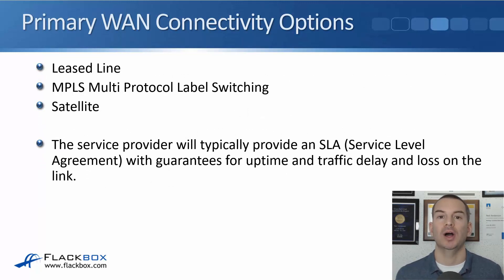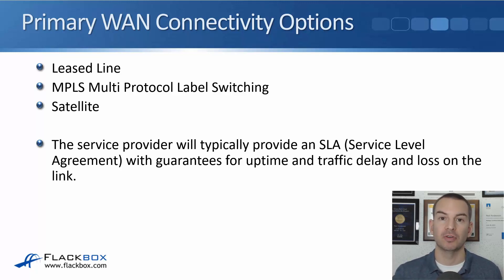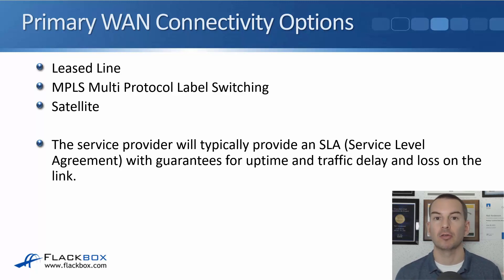Here I'm going to use the terminology that Cisco uses for the CCNA exam. Looking first at our primary WAN connectivity options — when I say a primary option, I mean this is going to be used by a corporation for their main connectivity to the internet or to their other offices. The options here are leased lines, MPLS (multi-protocol label switching), and satellite. I'm going to have separate lectures for these later. Now if it's a really large company, they might actually own the entire WAN infrastructure.